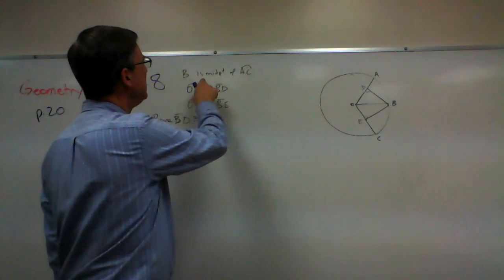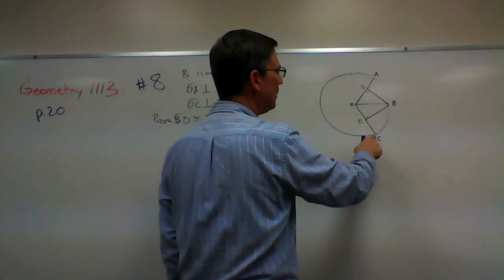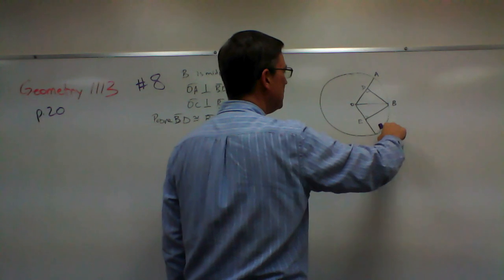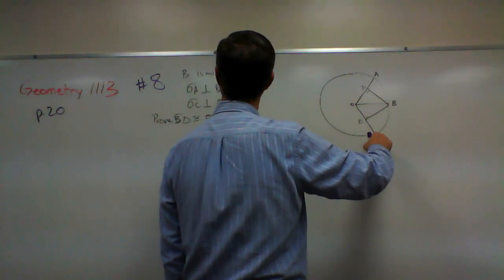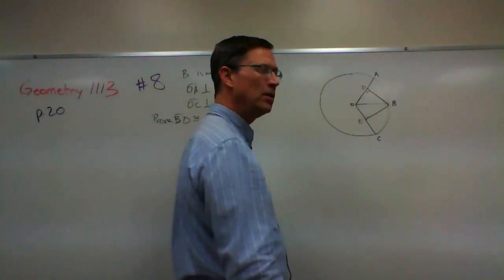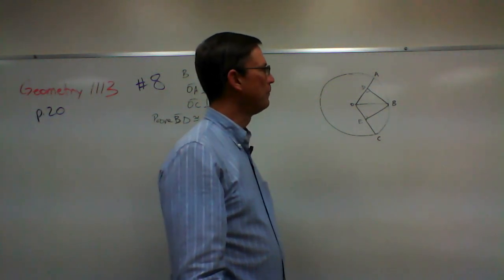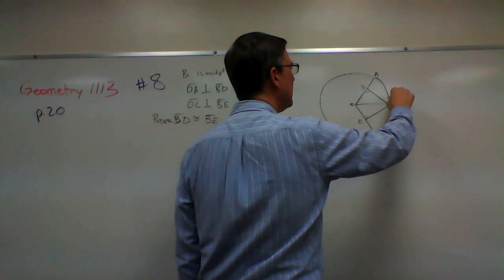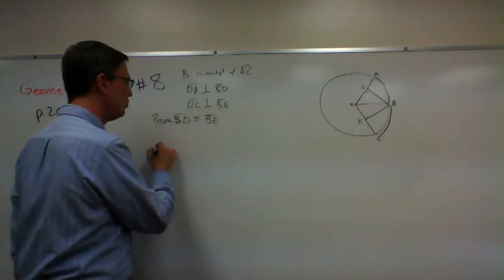We're told that B is the midpoint of AC. Let's come over here to the diagram. Let's actually look at what we're talking about. AC is this arc. If AC is that arc and B is the midpoint, why do you think they're telling us that? We're going to use that somehow. So early on we need to say that arc AB and arc BC are congruent.